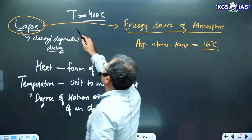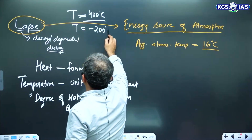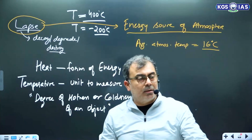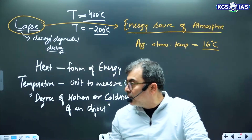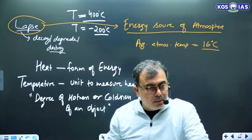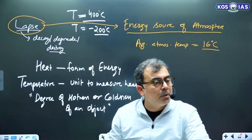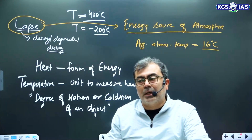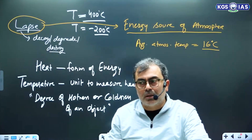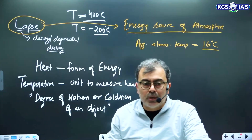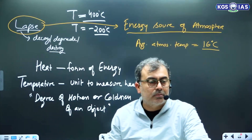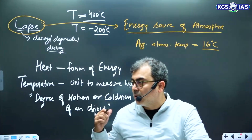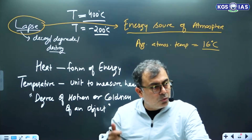If temperature is minus 200 degrees Celsius, it is not safe to touch it. You know zero degrees is ice. Minus 200 is dry ice. Dry ice is frozen carbon dioxide — it is very cold. If you touch it, it will also cause burns. Too cold causes burns, too hot causes burns.